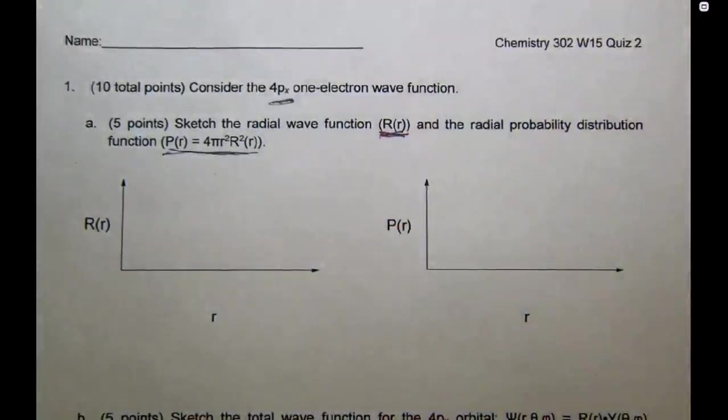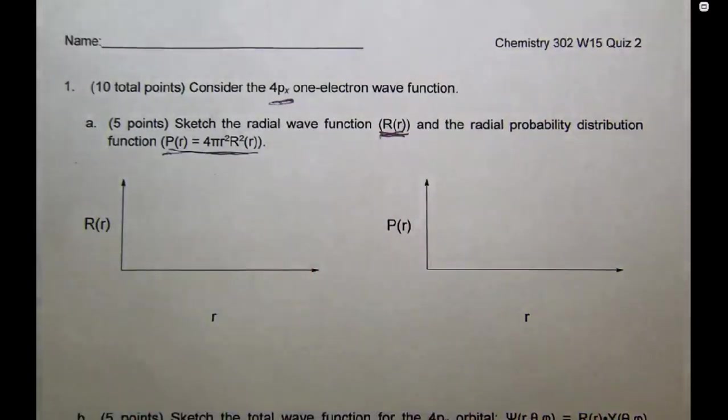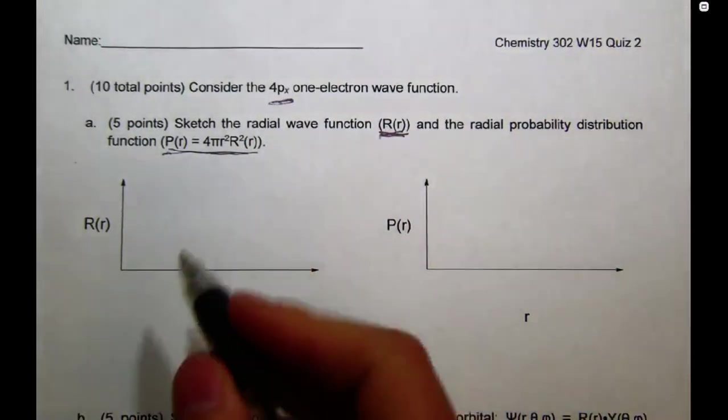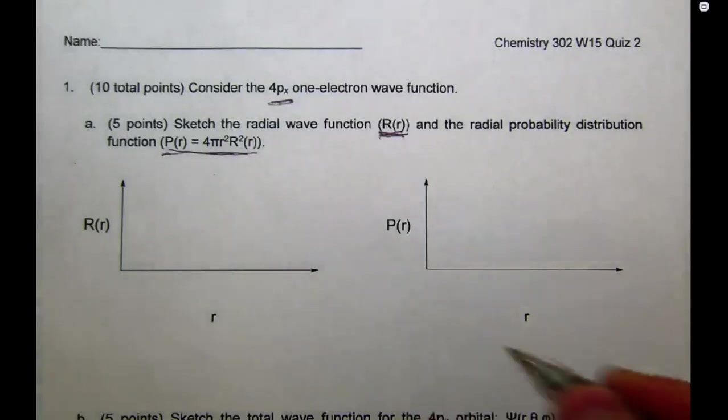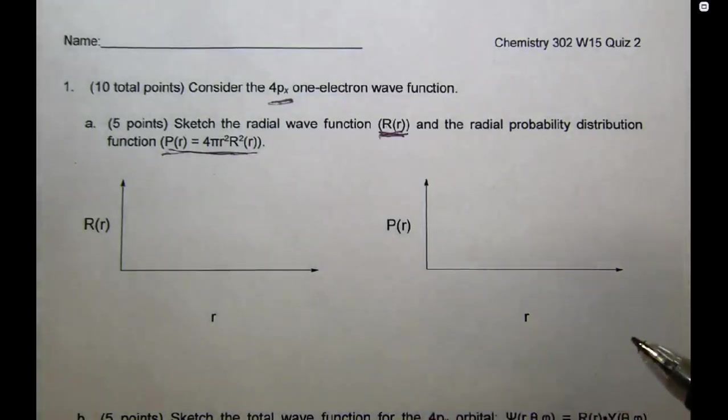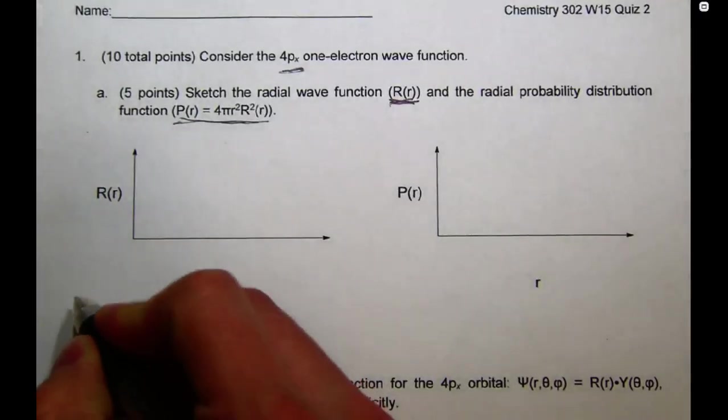So to start, let's just jump right in with the radial wave function. The general shape of the radial wave function came from the nodes, and that's something that you just had to have remembered. But there is one thing that we can calculate ahead of time, and that's the number of radial nodes that are going to be in the 4px orbital.